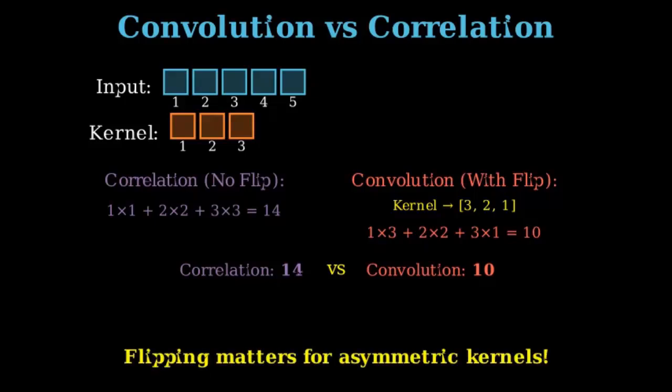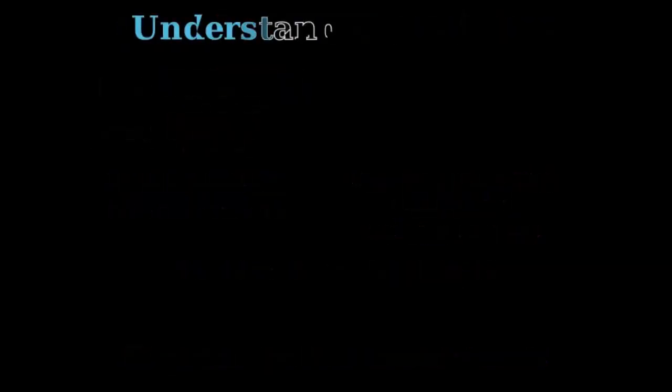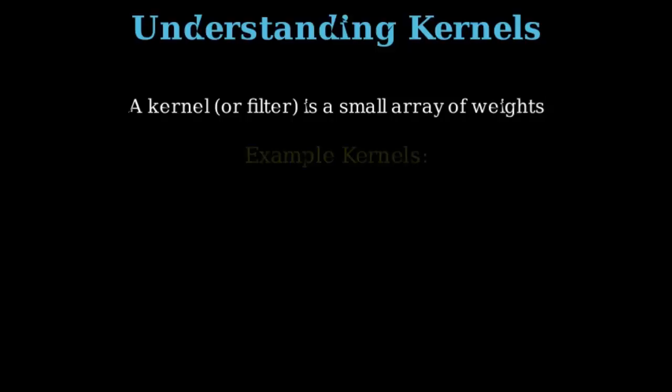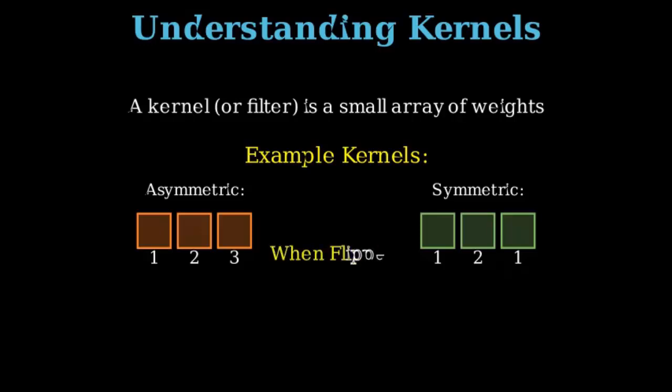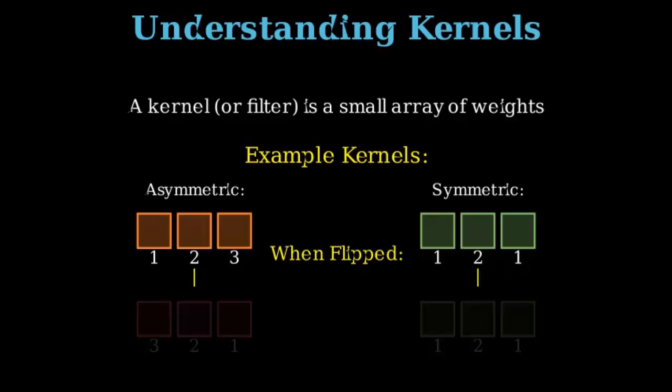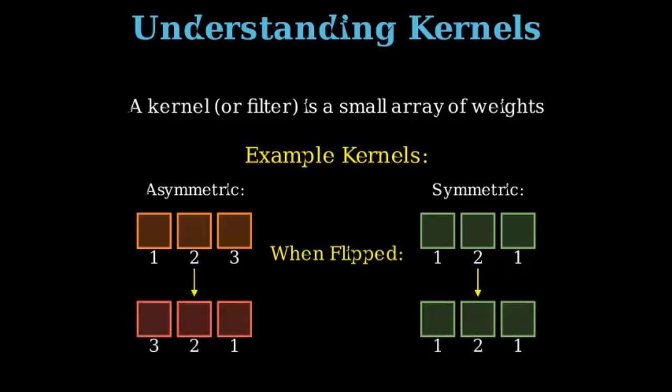In deep learning frameworks, the flip is usually omitted because the kernel weights are learned anyway, effectively making the learned filter the flipped version if needed. We should also understand what kind of kernels we have. There are two core kinds of kernels: symmetric and non-symmetric. As we know, a kernel or filter is a small array of weights. Asymmetric kernels when flipped change the weightage, and symmetric ones remain the same.